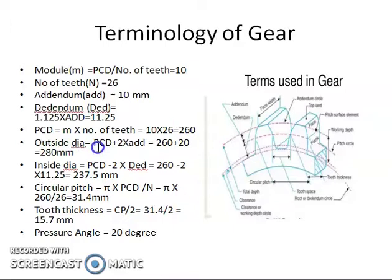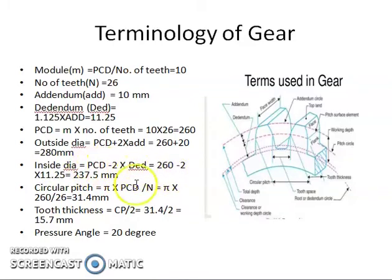The outside diameter, or addendum circle diameter, is the pitch circle diameter plus 2 times addendum — that is 260 plus 20, giving 280 mm. The addendum circle is the circle that passes from the top of the tooth. The inside diameter, or dedendum circle diameter, is PCD minus 2 times dedendum — that is 260 minus 2 into 11.25, giving 237.5 mm.